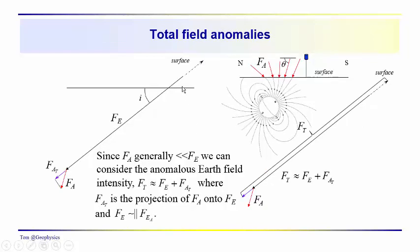Just as a reminder, we have the Earth's main magnetic field. The anomalous field over this object that we might be looking for has field intensities that have variable orientation as you run your magnetic survey across the area. We just take a component, and since F sub A is much, much larger than F sub B, the anomalous Earth field intensity F sub T — which would be the sum of F sub E and F sub A — is approximated by the sum of the Earth's main magnetic field intensity and the projection of F sub A onto that vector orientation, so that we get the vector F sub AT.